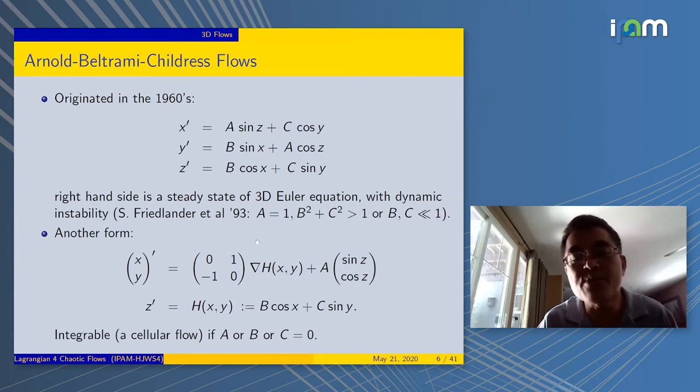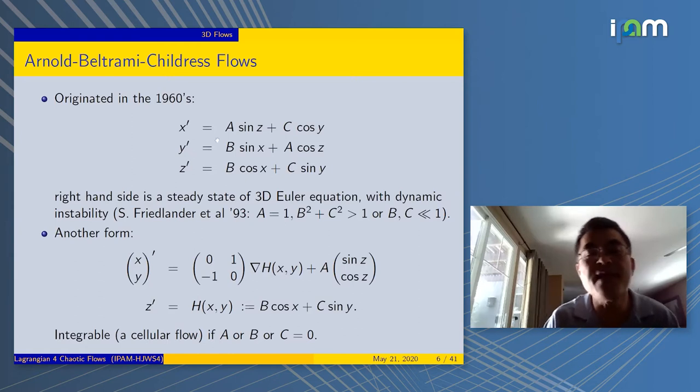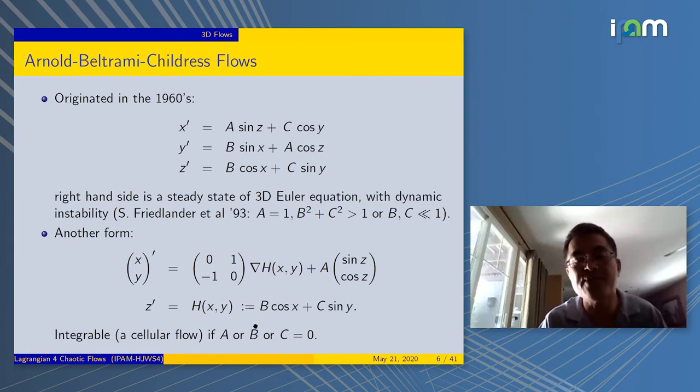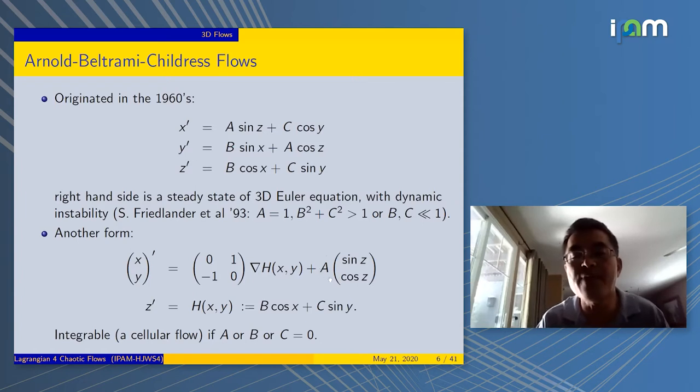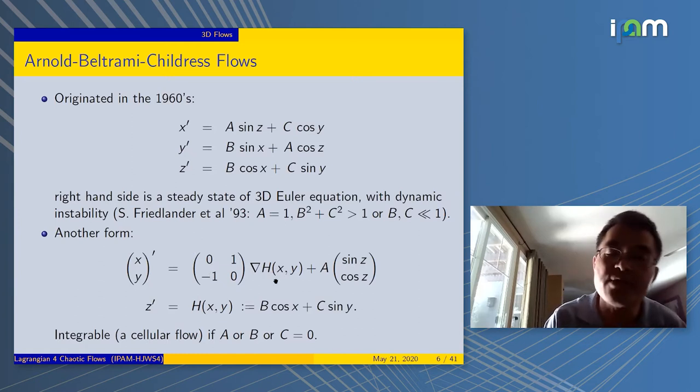Today we're going to just take it as a flow and look at how the particles move in there. To draw a connection with the previous Hamiltonian flow, you can write the first two components into this form. Introduce the h function, which is b cosine x plus c sine y. The first two equations could be rewritten this way. It's not Hamiltonian.